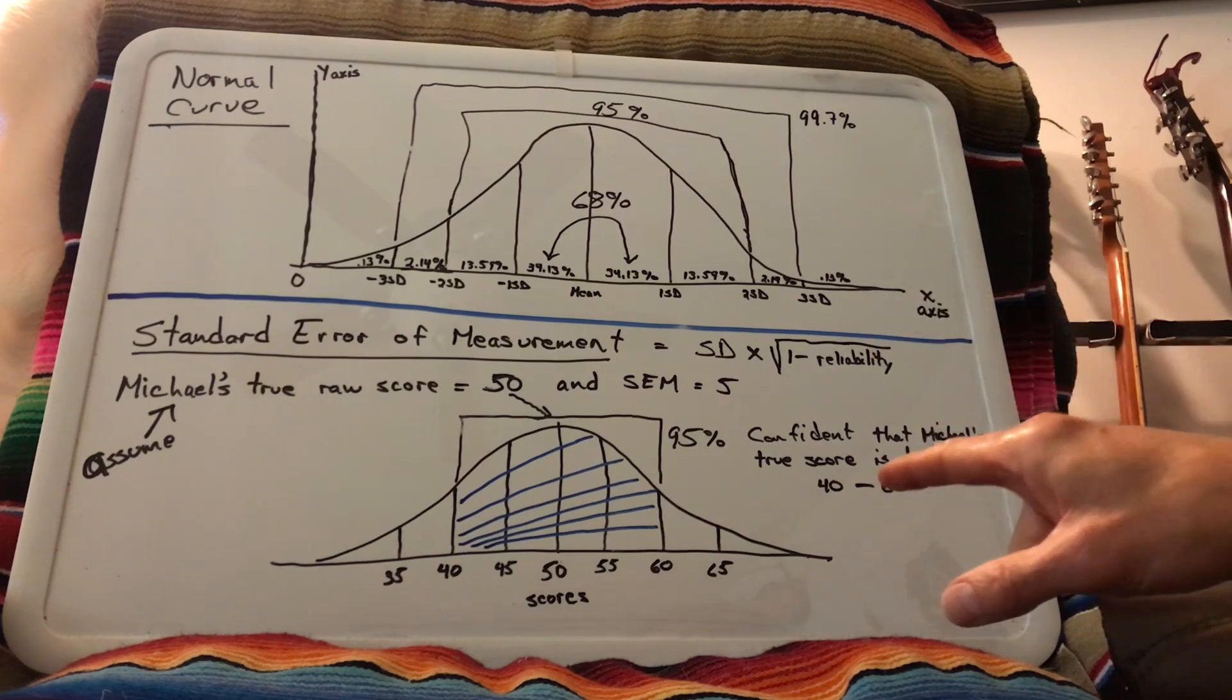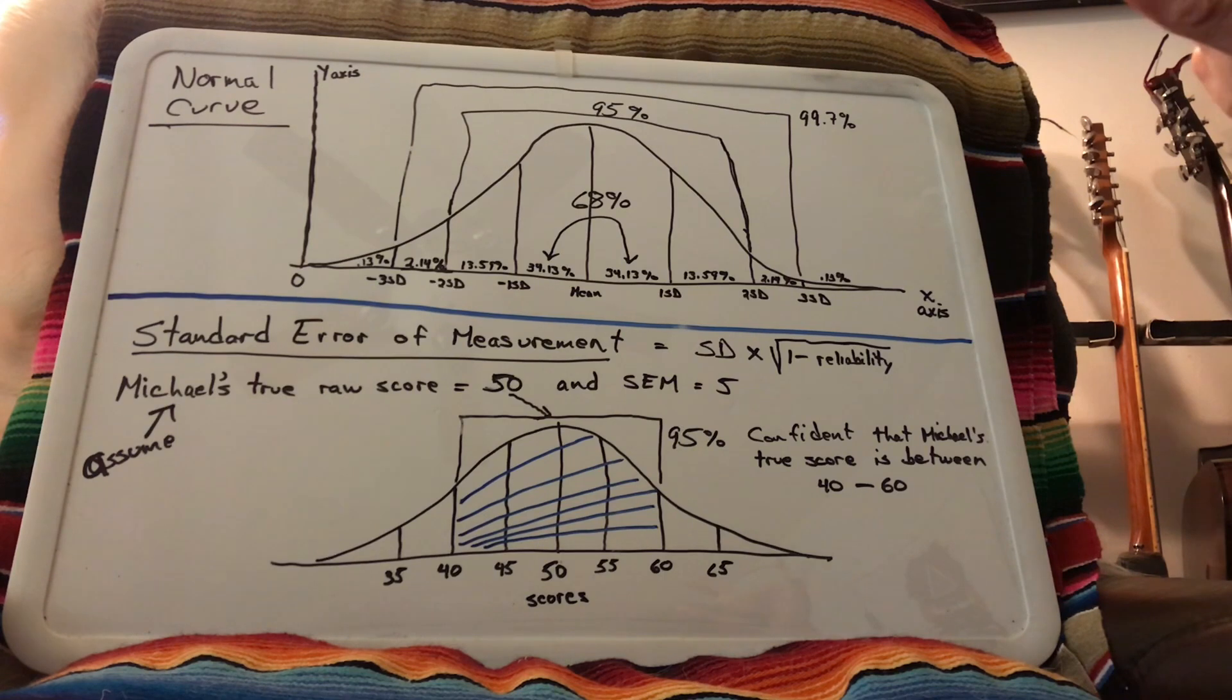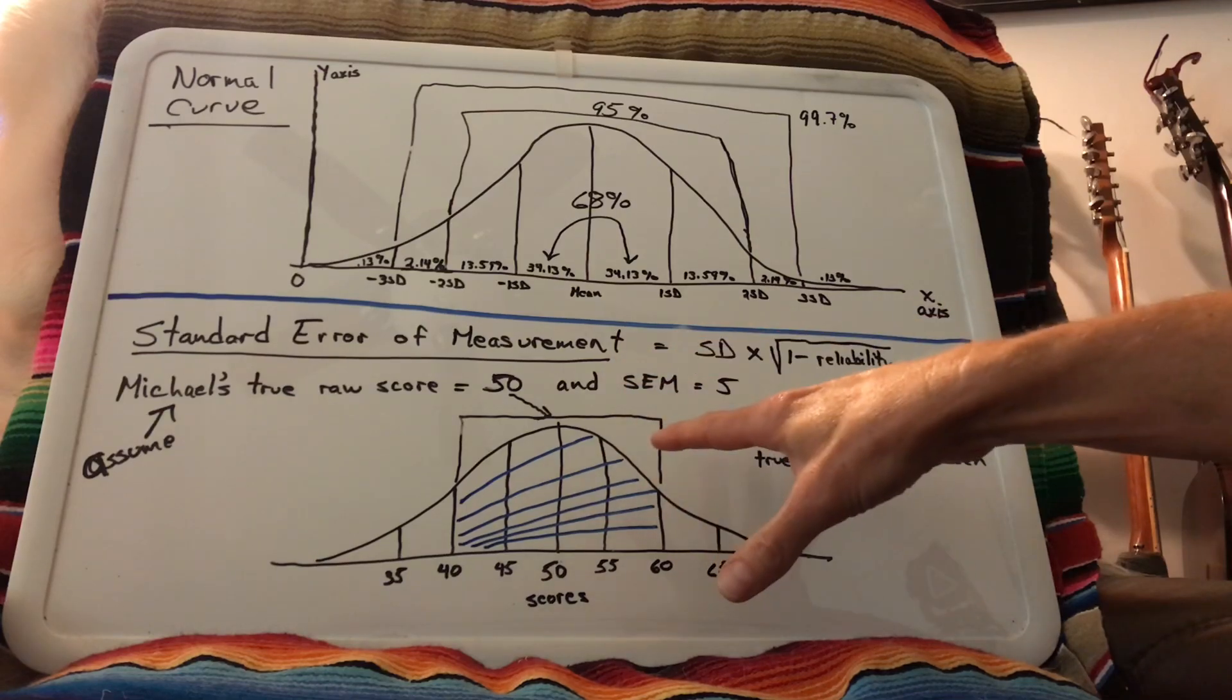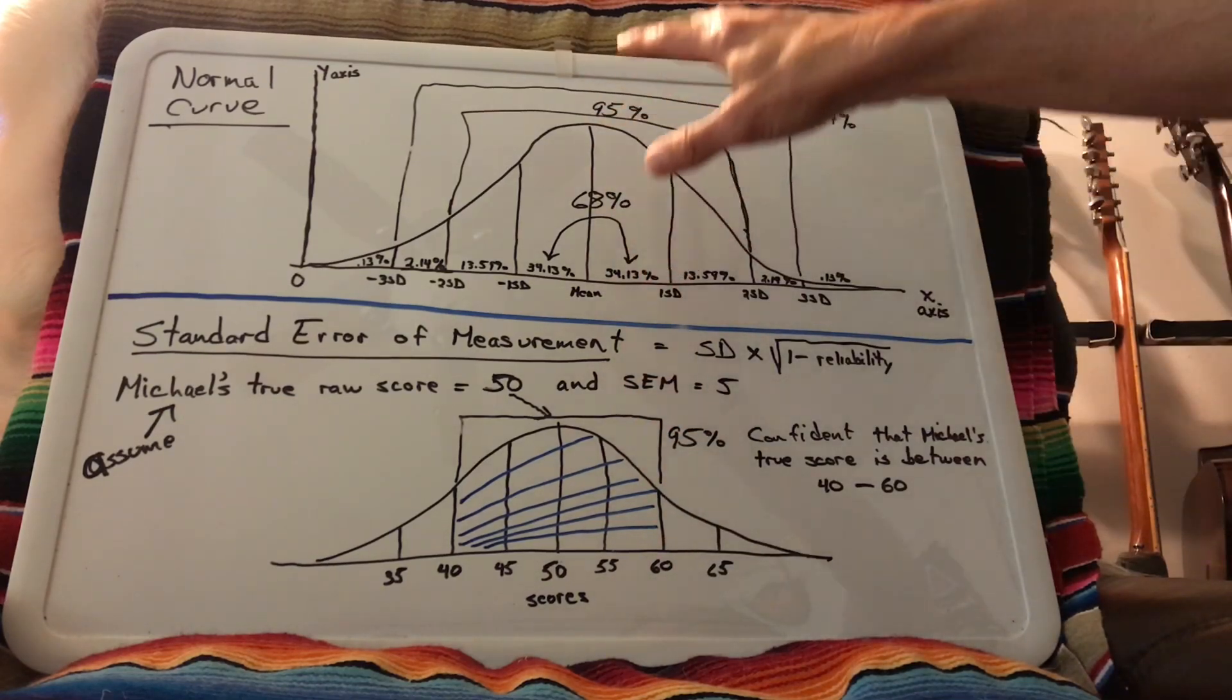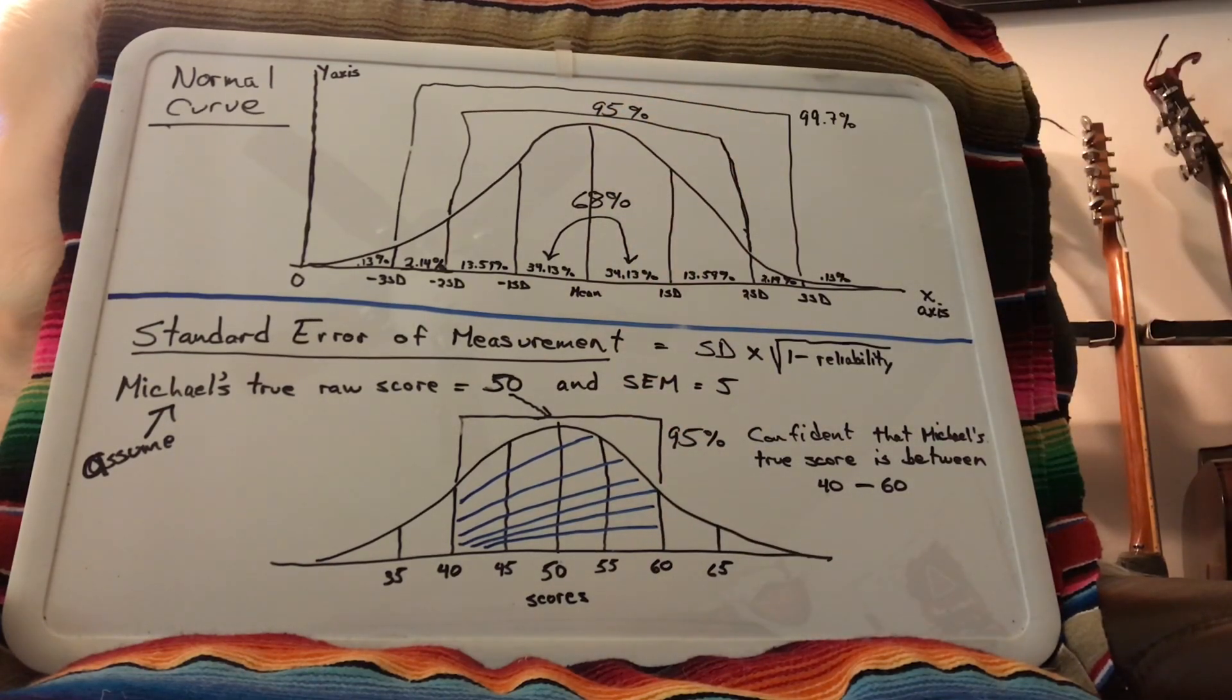And it will tell you when you see a test such as IQ, they're going to give you SEM, standard error of measurement, and then they're going to tell you 95% confidence intervals. That's where this is coming from and it's based on the principle of the normal curve.